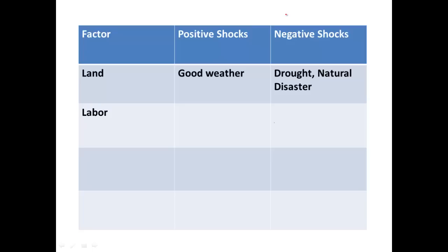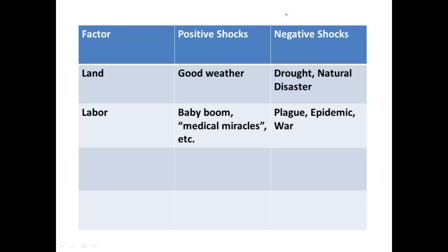Labor. What could go well with labor — suddenly bringing us more or more skilled labor? Think about a baby boom, where we get a big increase in population. A lot of people think that's bad for the economy — overpopulation — but actually it's good for the economy; we have a lot more workers, especially if they're educated and trained. Medical miracles that extend people's working lifespan would do the same thing. What could go wrong? A mass death — something like a plague that wipes out a big chunk of the population, or an epidemic. War is not good for children and other living things — very true — and it's also not good for economic output.